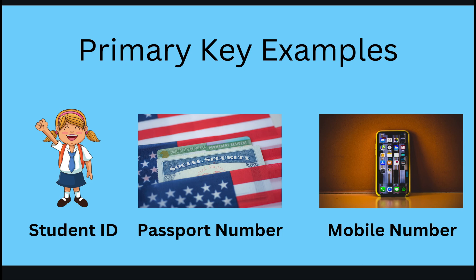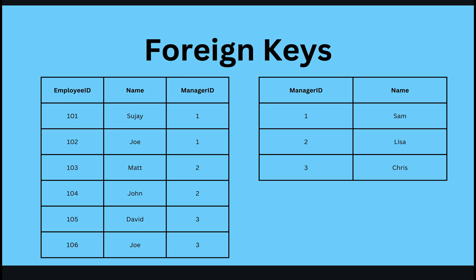Now let's look at other examples you're familiar with. Student IDs or roll numbers are also great candidates for primary keys. Your passport number is another example — no two citizens will have a passport with the exact same number. Similarly, mobile numbers are unique: when you call someone, it rings to only one person. Therefore, mobile numbers are also great candidates for primary keys.